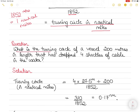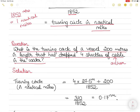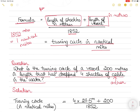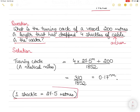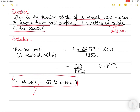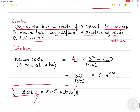Example: a vessel 200 meters in length has dropped four shackles of anchor cable. One shackle of anchor cable equals 27.5 meters, so four shackles equal 4 × 27.5 meters = 110 meters. Adding the vessel length: 110 + 200 = 310 meters. Dividing by 1852 gives the turning circle radius.